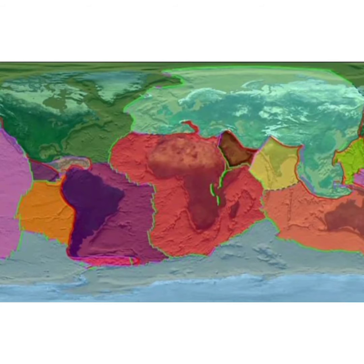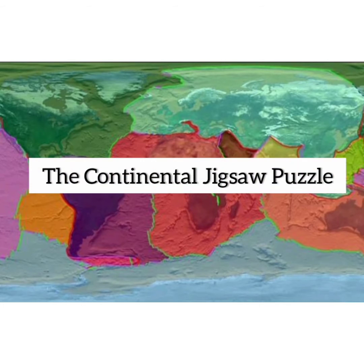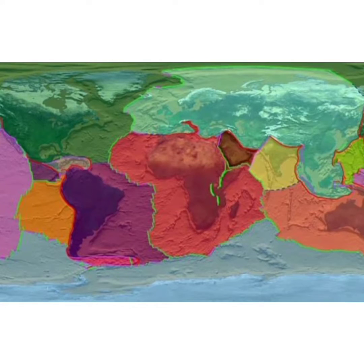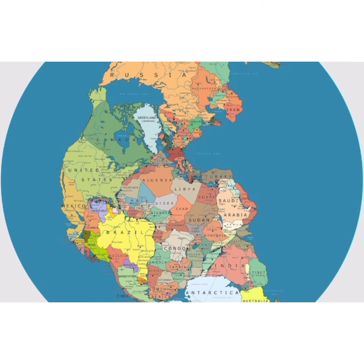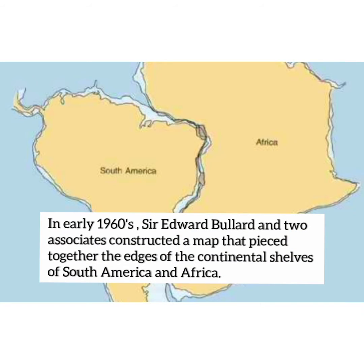Like a few others before him, Wegener suspected that the continents might once have been joined when he noticed the similarity of coastlines on opposite sides of the Atlantic Ocean. Opponents correctly argued that shorelines are continually modified by wave erosion and depositional processes. In the early 1960s, Sir Edward Bullard and two colleagues constructed a map that pieced together the edges of the continental shelves of South America and Africa.